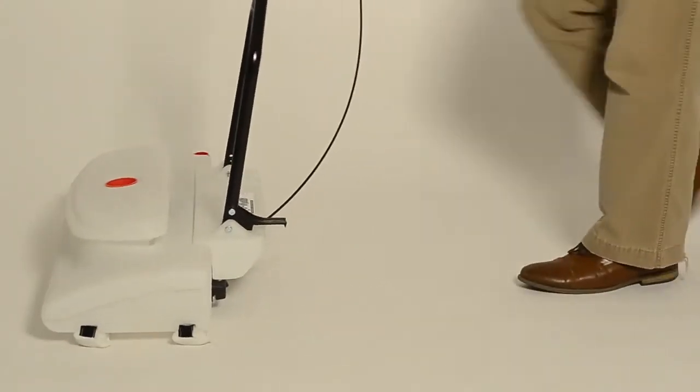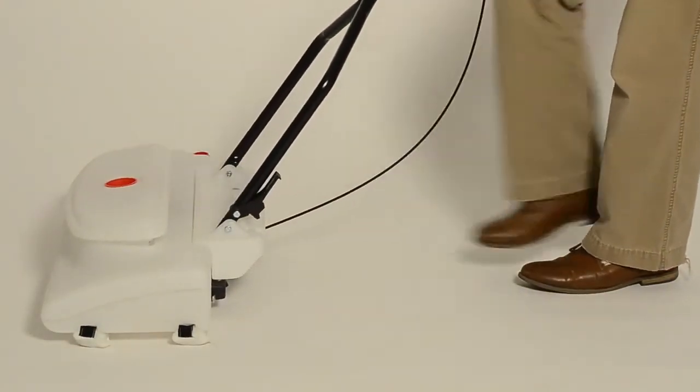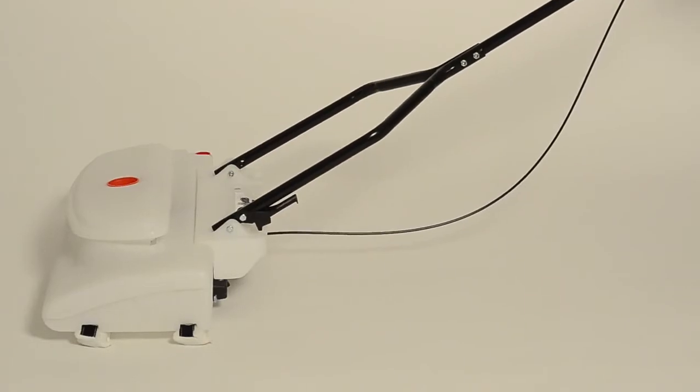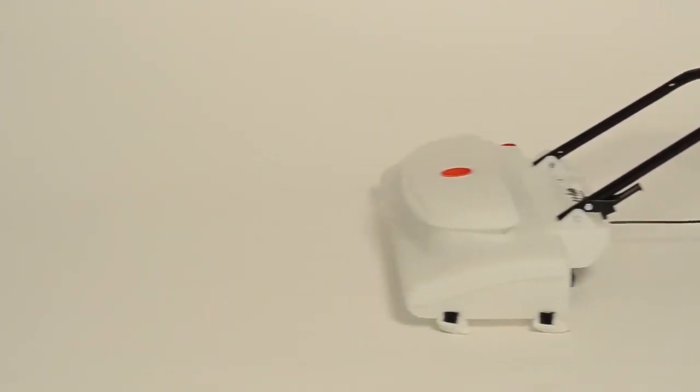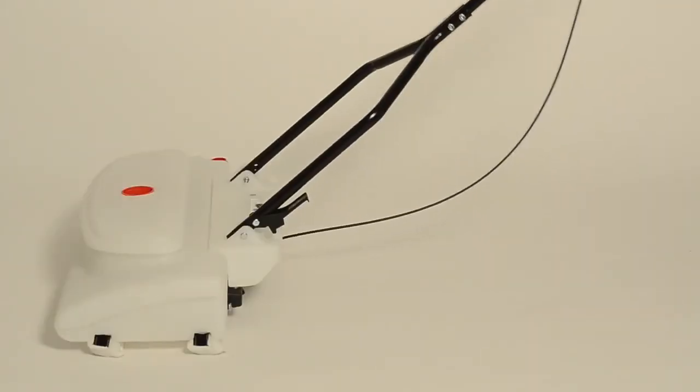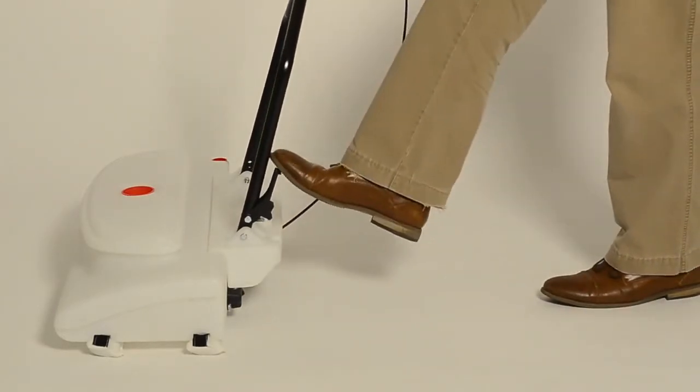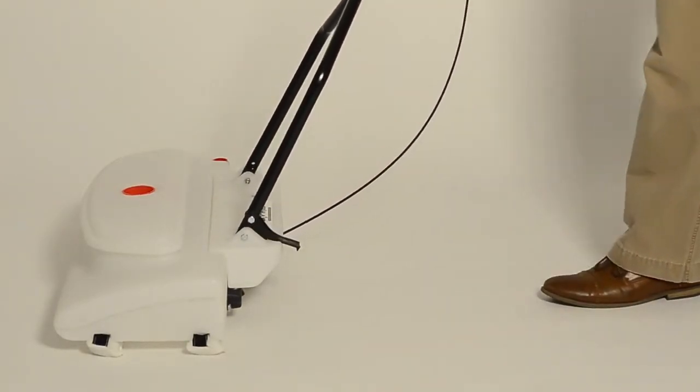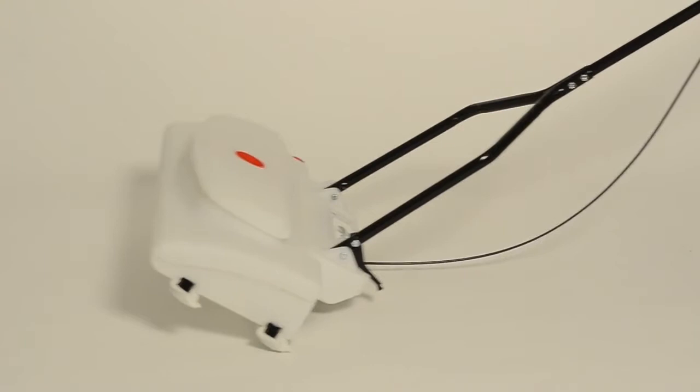The other feature to point out is the handle release lever. When using the Wax-O-Matic unit, be sure the lever is in the unlocked position. When you want to move the Wax-O-Matic to your next aisle or pass, simply engage the lever into the locked position.